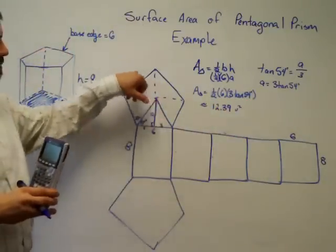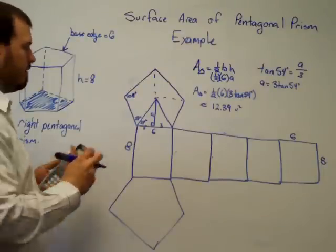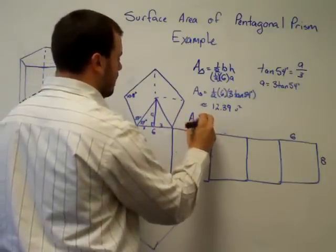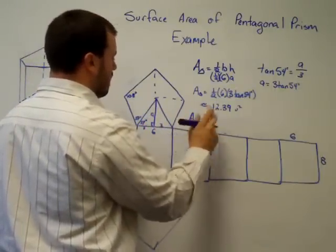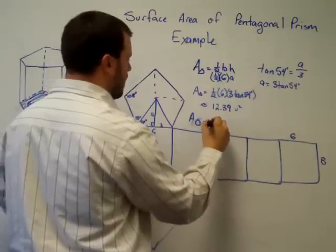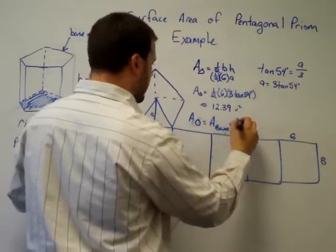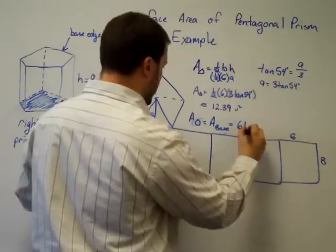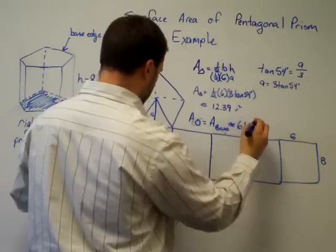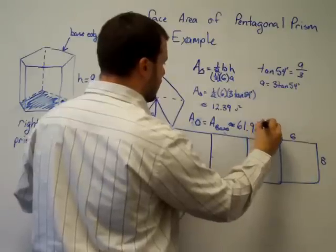And then this pentagon has five. So the area of one pentagon, or the area of the base, is equal to 61.92 units squared.